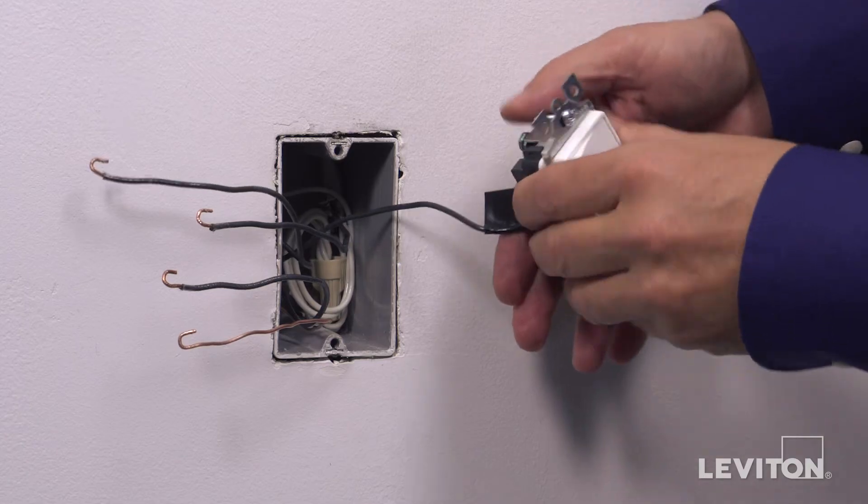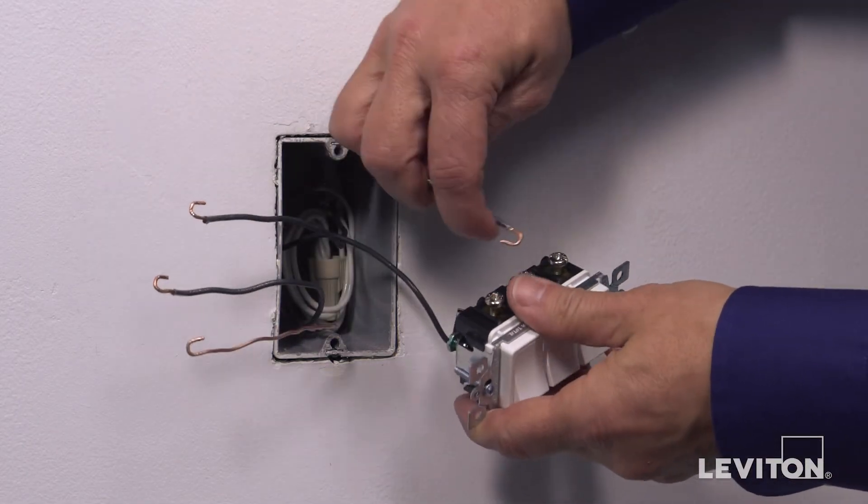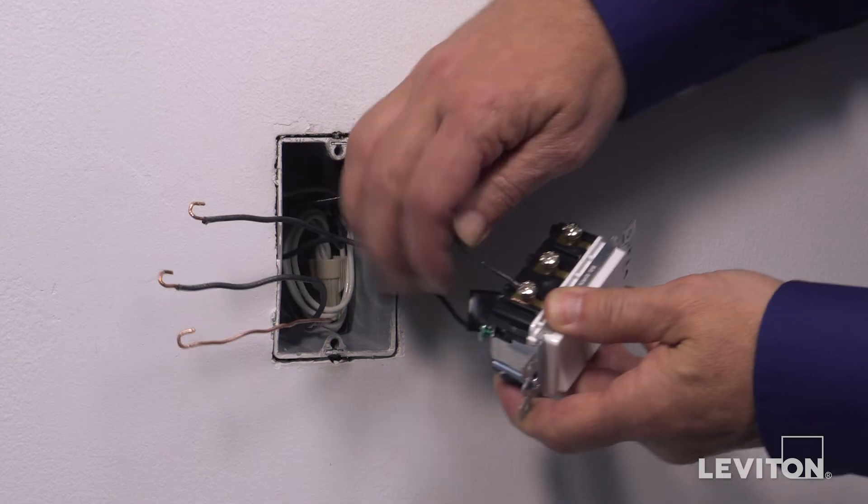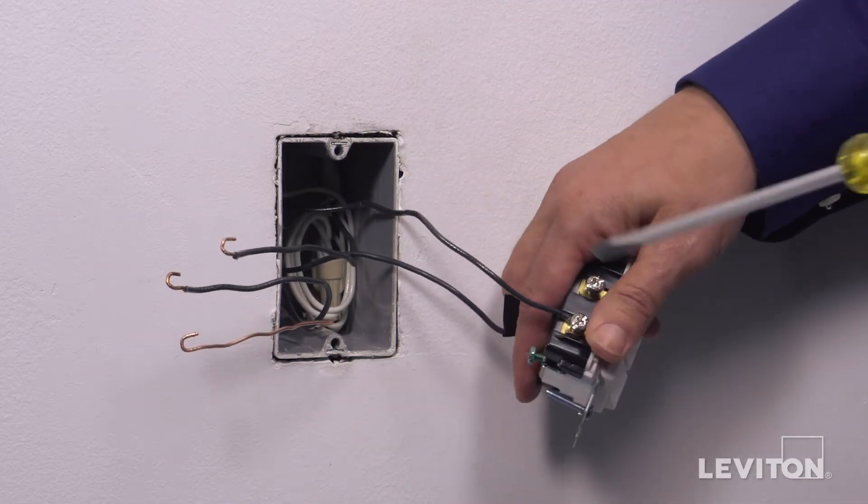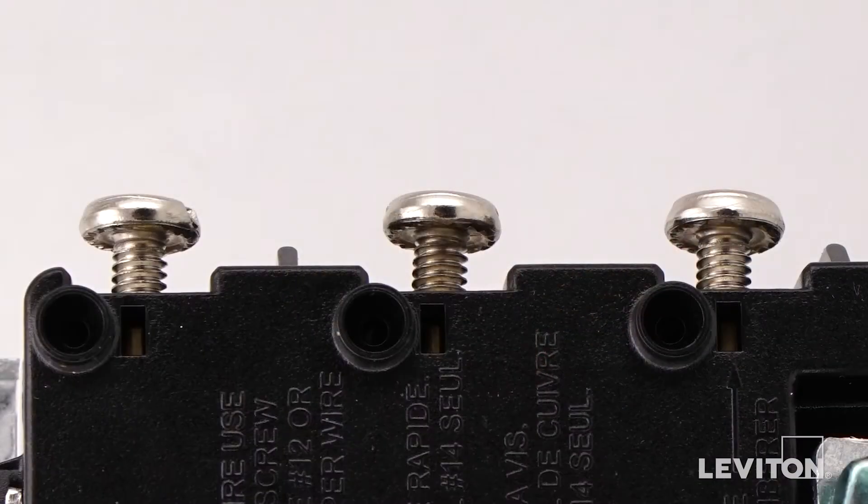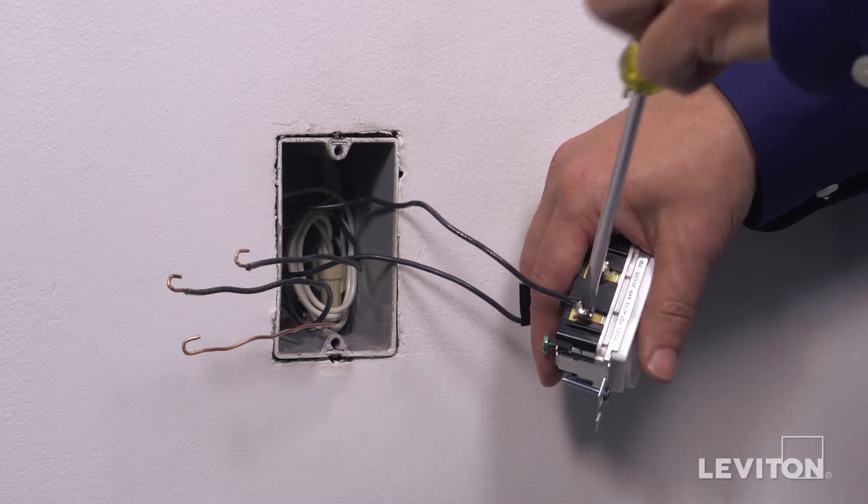On the other side of the device, loop one black wall box load wire clockwise three-quarters of a turn around any of the silver terminal screws. Tighten firmly.